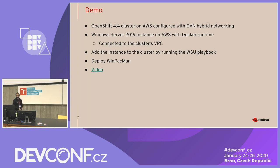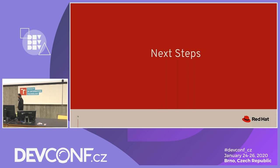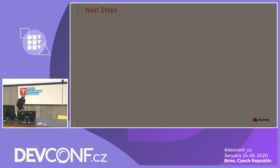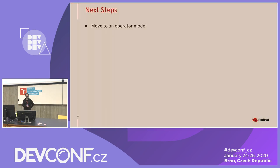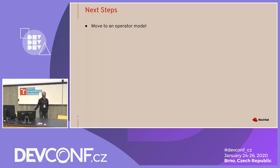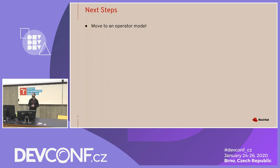If the demo doesn't work, I have a link to a video that will show the whole thing. While the demo runs, I want to talk about what the team is thinking about for next steps. We want to move to an operator model — moving away from just running the Ansible playbook — to make it much easier for customers to run Windows workloads.